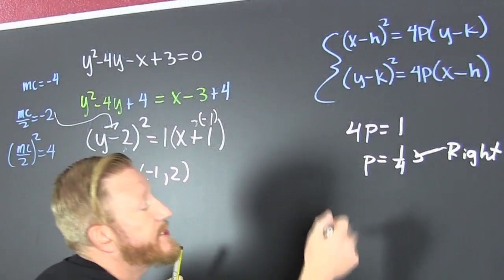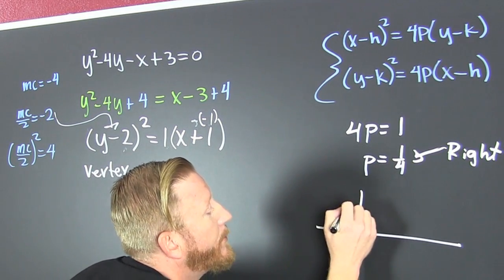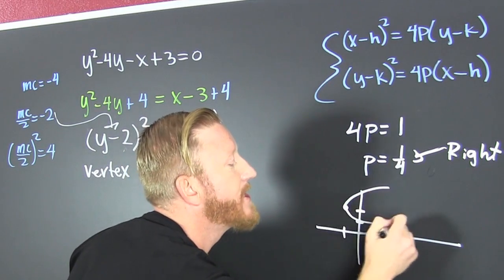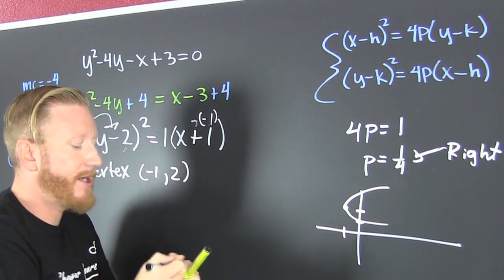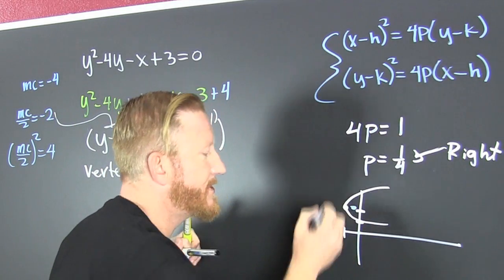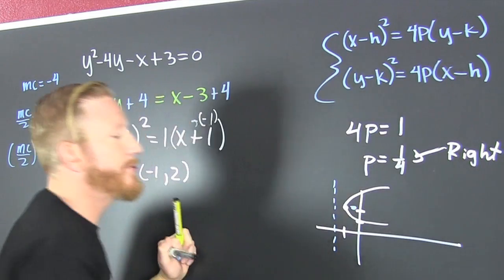If I was going to roughly sketch that guy, my vertex minus 1, 2, boom. Does it open right or does it open left? It opens right. Why did I draw that pic? Because my parabola hugs the focus and runs from the directrix. Let's find those guys.